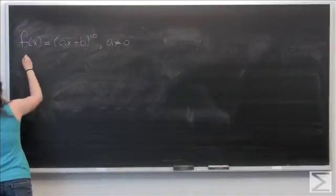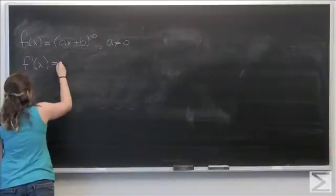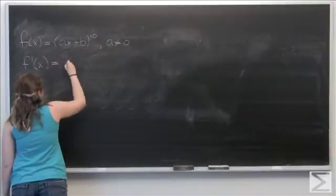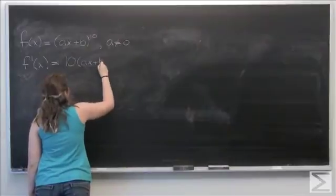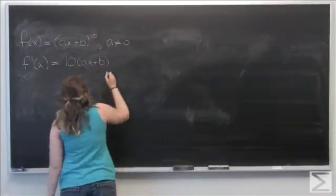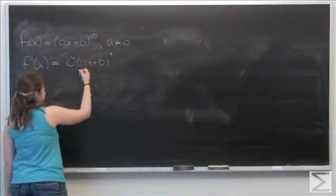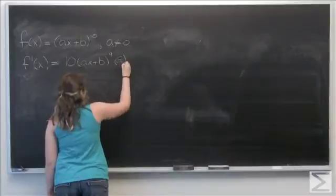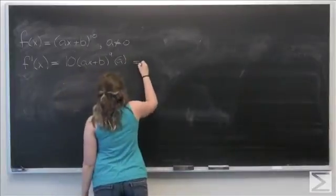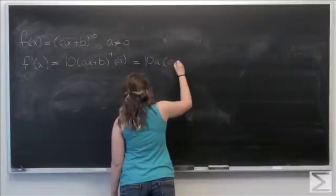So let's take the first derivative of the function of x. We can pull down the 10, so we have ax plus b to the 9th. Now we want times the derivative of this inside function, which is just a. So we have 10a times ax plus b to the 9th.